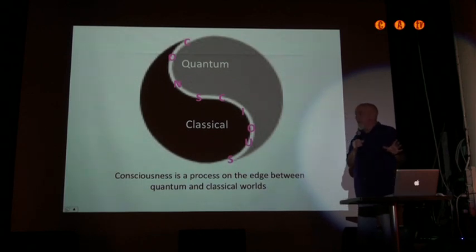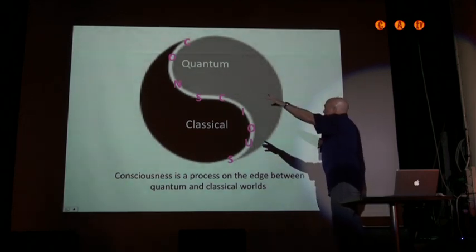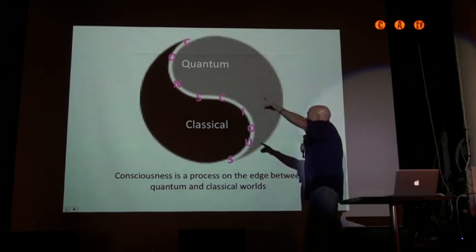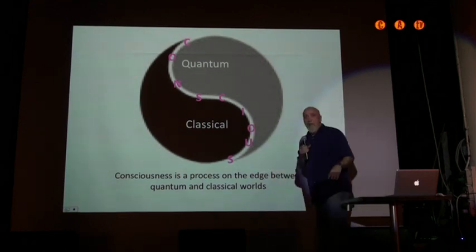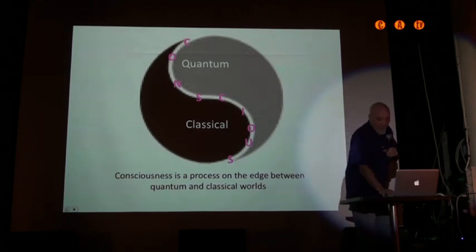Let me just wrap up and say that in a very general sense, the world is divided into the quantum and the classical. If Penrose is right, consciousness is happening literally on the edge. It's a self-organizing process on the edge between the quantum and classical worlds.